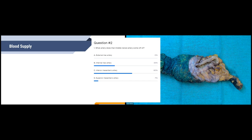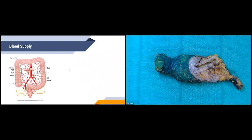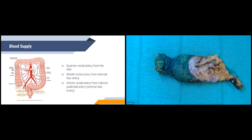Most people picked the inferior mesenteric artery, and unfortunately that's not the correct one. For the blood supply: the superior rectal artery comes off the inferior mesenteric artery; the middle rectal artery actually comes off the internal iliac artery, as you can see in the diagram; and then the inferior rectal artery comes off the internal pudendal artery, which is a smaller branch of the internal iliac.